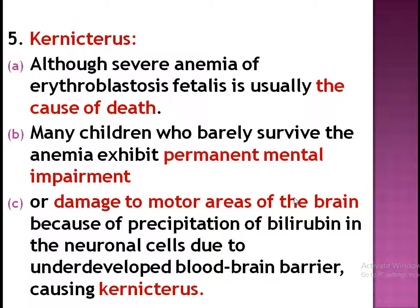Kernicterus may occur — it is a very specific disease condition in which there will be severe anemia and erythroblastosis fetalis, and it may lead to the death of the child. Many children who barely survive the anemia accept permanent mental impairment or damage to the motor areas of the brain, because of precipitation of bilirubin in the neuronal cells due to the underdeveloped blood-brain barrier causing kernicterus. So it is a special type of condition due to RH incompatibility or mismatched RH group with erythroblastosis fetalis, and it especially includes the neuronal cells.